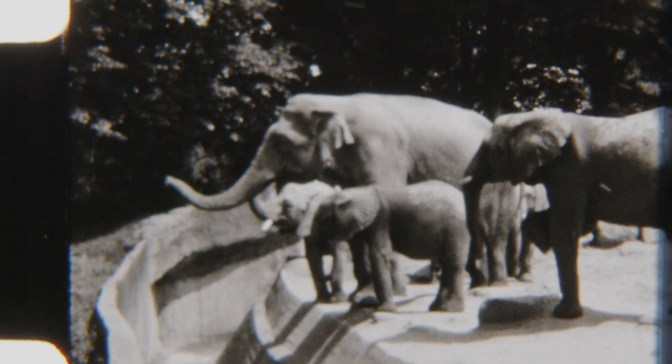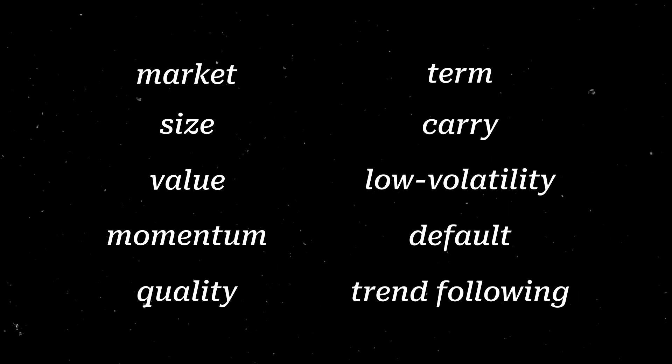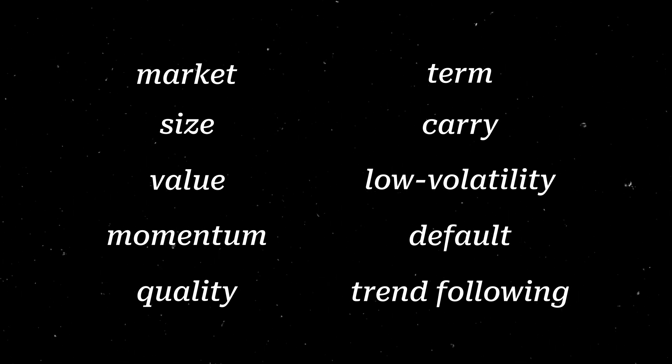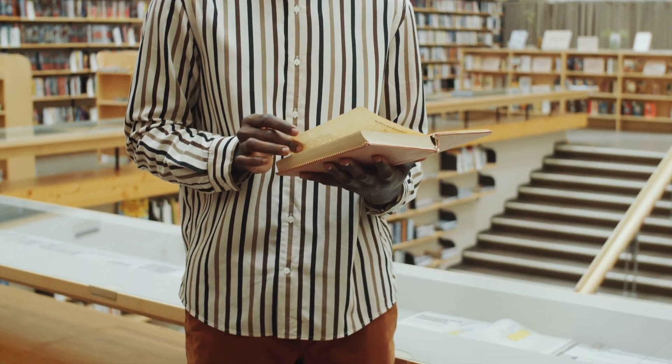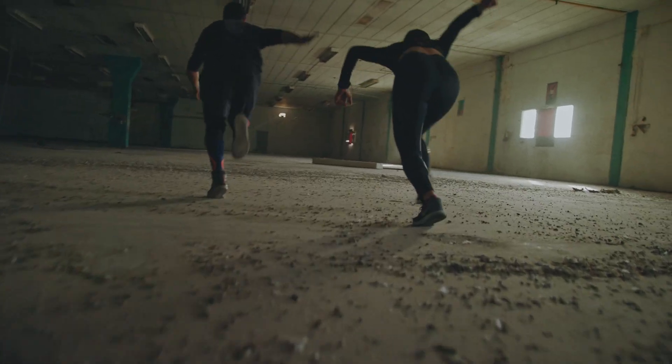This narrowed down the so-called factor zoo to a smaller number of factors that are both significant and investable. Swedroe and Berkin narrowed down the list to the following: the market factor or beta, size, value, momentum, quality or profitability, term, carry, low volatility, default or credit, and time series momentum — also known as trend following. Out of all of these, the market, value, and momentum factors have shown to have the largest premiums over the long term, meaning that forming a stock portfolio of value and momentum stocks can theoretically bring about market-beating results if these factors persist into the future, as empirical research has shown that both value and momentum have trounced the market, at least historically.